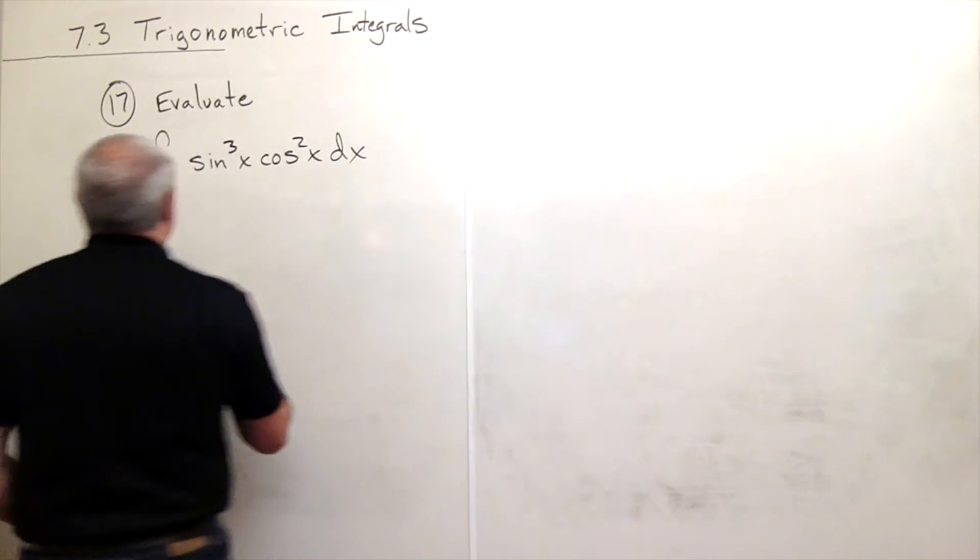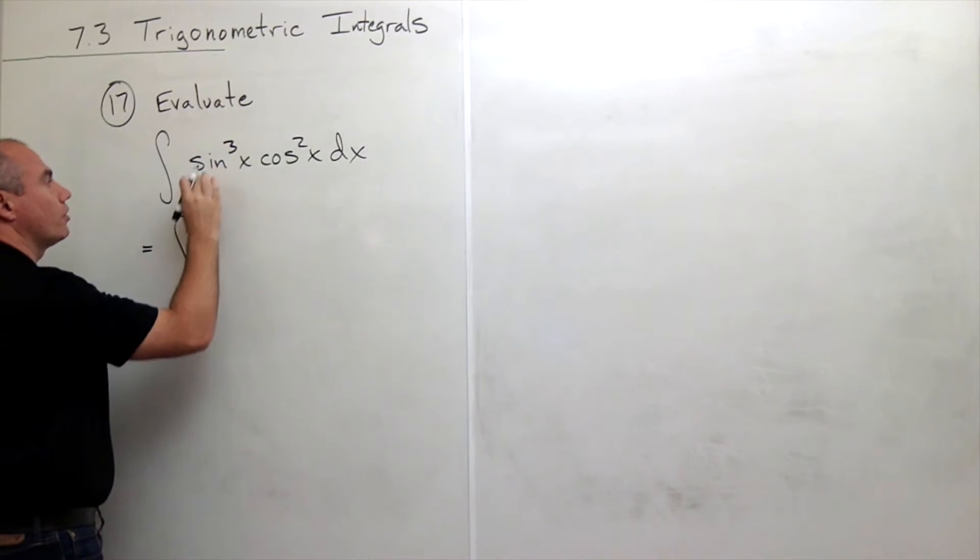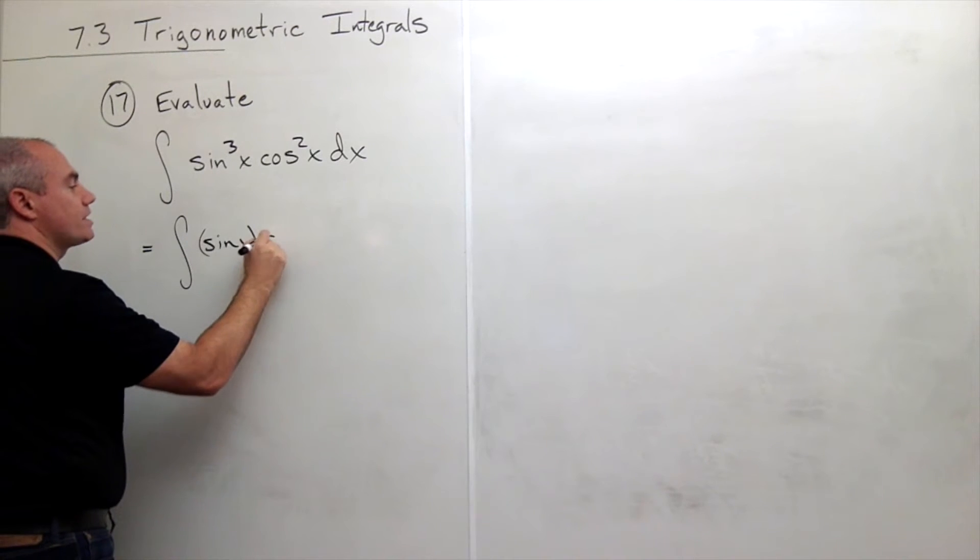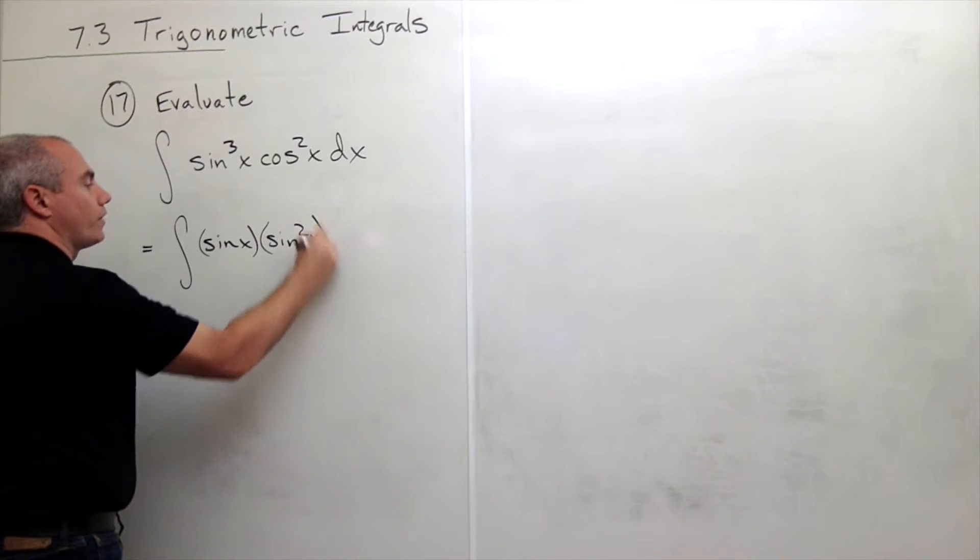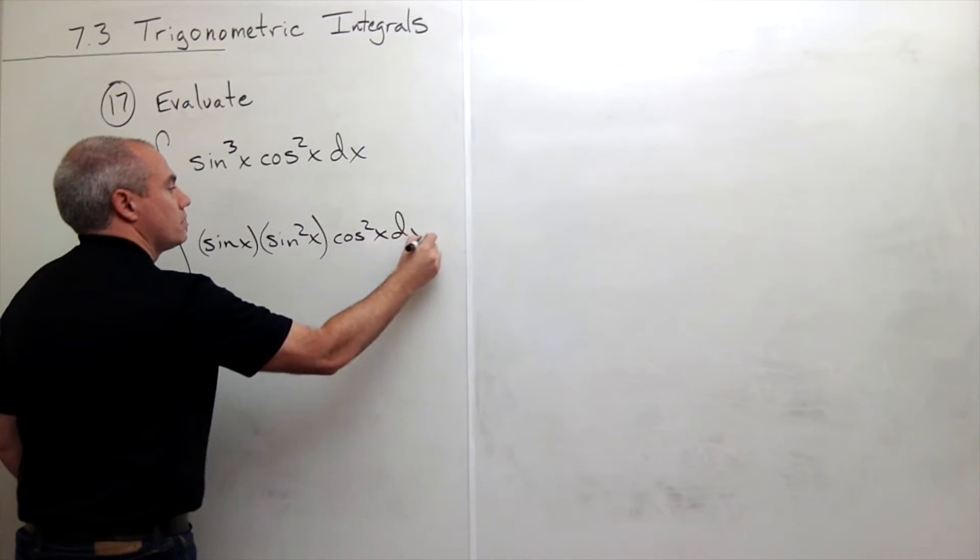So let's do it. I'm going to rewrite this as the integral of, I break one sine off, I have a sine x here, and then I have sine squared of x left over times cosine squared of x dx.